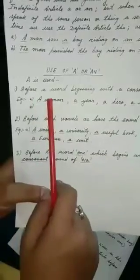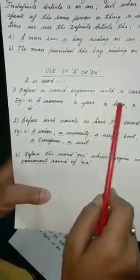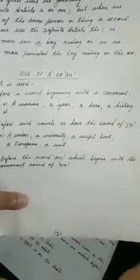Use of A or AN. A is used before a word beginning with a consonant. Like a woman, a year, a hero, a history. So I have to use A before a consonant word.